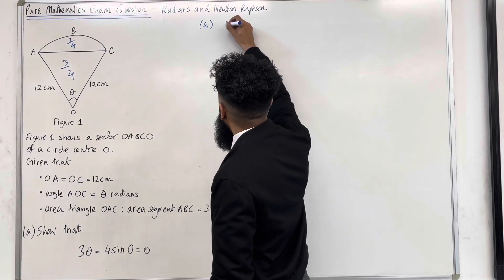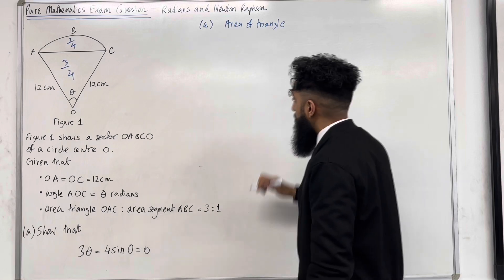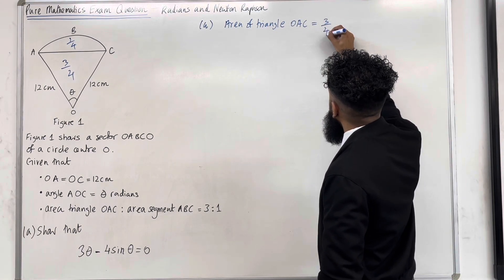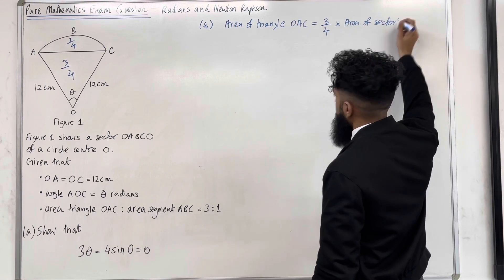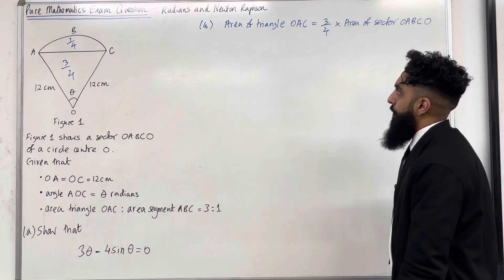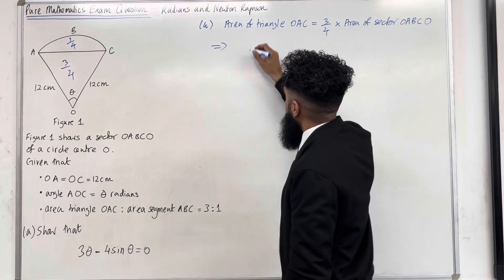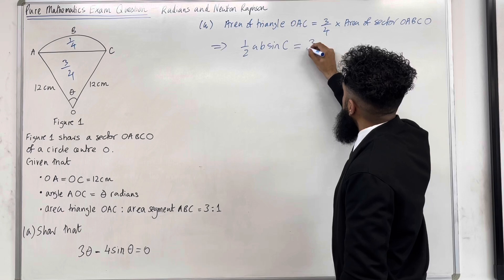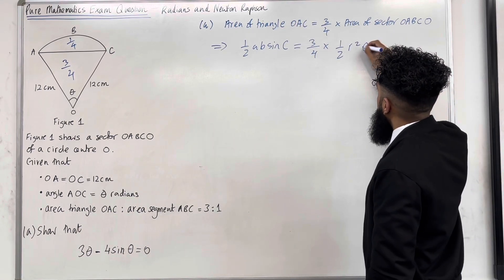If I take the area of the triangle, I know that area of triangle OAC has to equal three quarters of the area of sector OABCO. The area of the triangle is given by a half AB sine C equals 3 quarters multiplied by area of a sector, which is given by a half R squared theta.